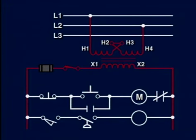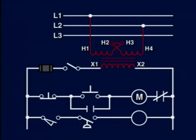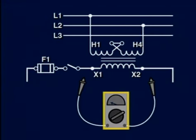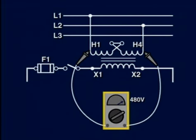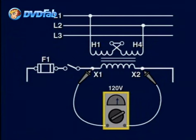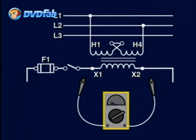To perform this check, we first disconnect power to the ladder circuit so that, if a short was the problem, it cannot occur during this check. We would check the incoming power to the primary of the transformer by testing the L1 and L2 voltage across the H1 and H4 terminals of the transformer. If the voltage is correct — in this case, 480 volts — then we would check the secondary for the proper voltage across the X1 and X2 terminals. If the voltages are correct, in this case 120 volts AC, the transformer is working okay. If not, the transformer is faulty and requires replacement.